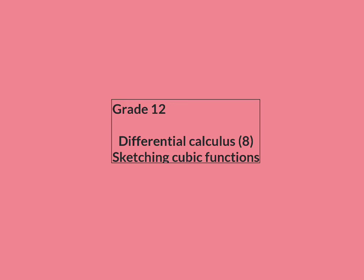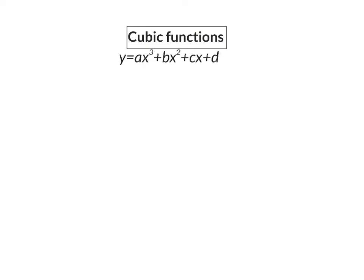In this lesson we're going to have a look at how to sketch a cubic function. The standard form for a cubic equation is y equals ax cubed plus bx squared plus cx plus d. This graph can have a maximum of two stationary points and always has one inflection point.